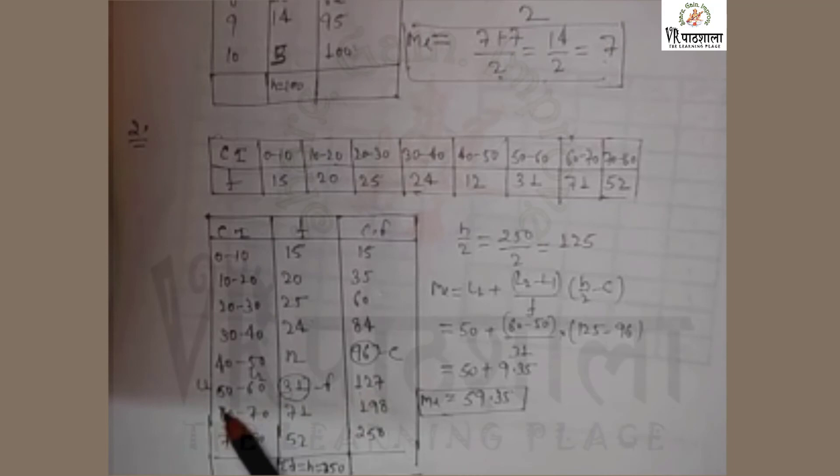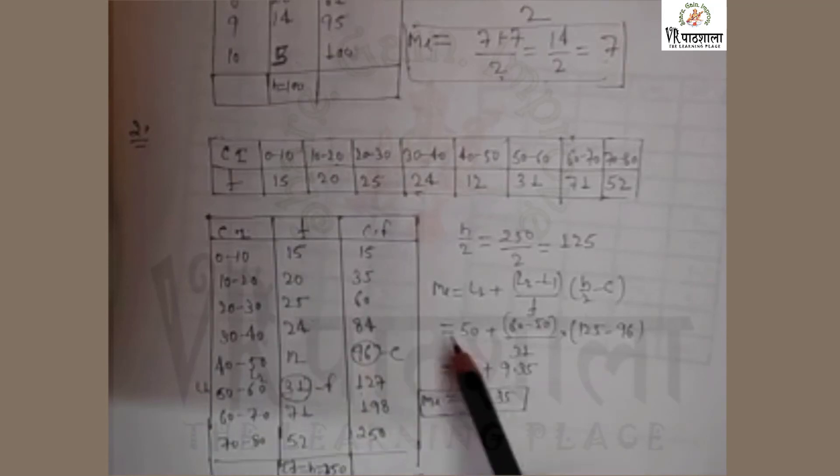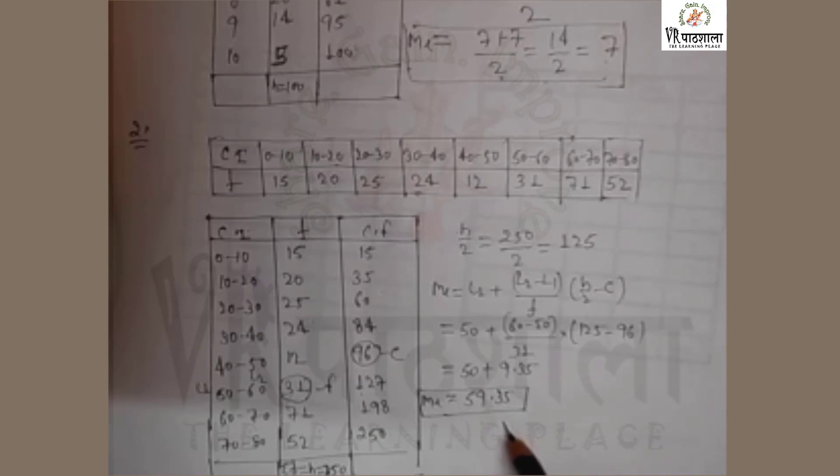So the lower limit l1 is 50, upper limit l2 is 60, frequency 31, and the capital C is 96. Now putting this value in the formula, we calculate median 59.35.